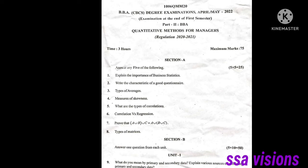Next, we have to go to section B. This is internal choices. Totally 5 sections, each section has a question. Question 9: What do you mean by primary and secondary data? Explain various sources of collecting primary and secondary data.